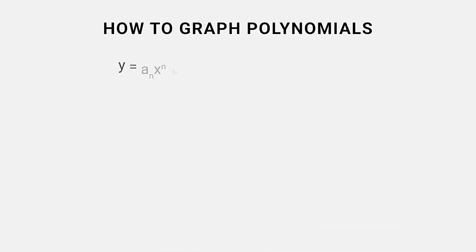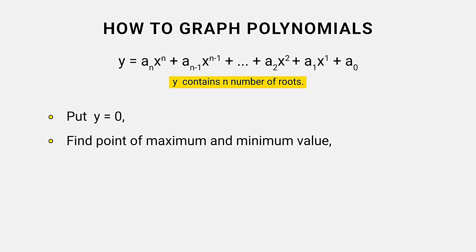If the given equation is a polynomial of the nth degree, then we know that it has n roots. Which can be found by putting y equal to 0. Now, we have to find the points of maximum and minimum value by differentiating the equation.